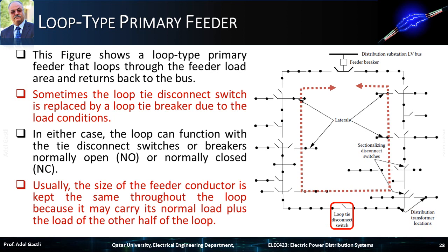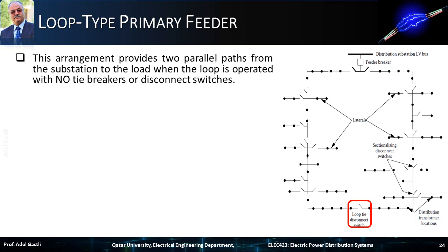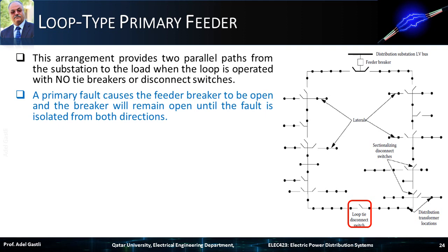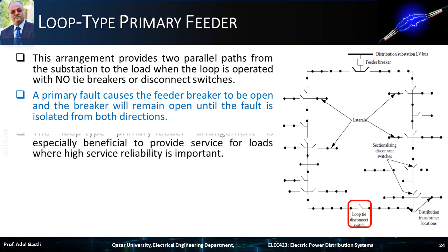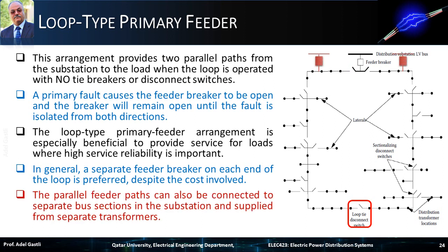Usually the size of the feeder conductor is kept the same throughout the loop, because it may carry its normal load plus the load of the other half of the loop. This arrangement provides two parallel paths from the substation to the load when the loop is operated with normally open (NO) tie breakers or disconnect switches. A primary fault causes the feeder breaker to open, and the breaker will remain open until the fault is isolated from both directions. The loop type primary feeder arrangement is especially beneficial to provide service for loads where high service reliability is important. In general, a separate feeder breaker on each end of the loop is preferred, despite the cost involved. The parallel feeder paths can also be connected to separate bus sections in the substation and supplied from separate transformers.